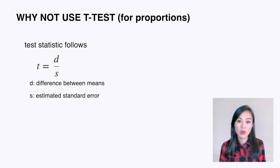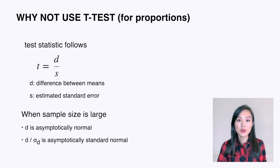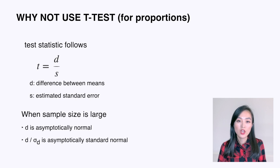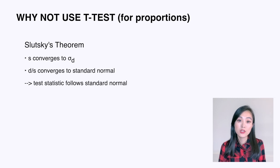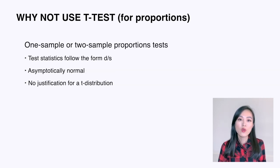In a typical t-test, the t-statistic follows the form d over s, where d is the difference between means and s is the estimated standard error of d. Because of the central limit theorem, when sample sizes are sufficiently large, a statistic like d — the difference between means — is asymptotically normally distributed, and the standardized version d over sigma of d will be asymptotically standard normal. There is another theorem called Slutsky's theorem, which states that as long as the denominator s converges in probability to that unknown standard error sigma d, then d over s should converge to a standard normal distribution.